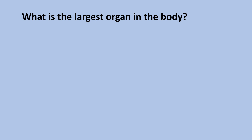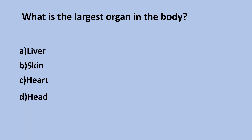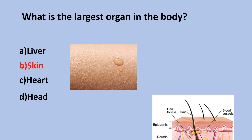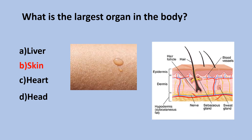Next question: what is the largest organ in the body? Is it the liver, the skin, the heart, or the head? The largest organ is the skin. Note that the liver is the heaviest. The skin and its derivatives — such as nails, sweat glands, hair, and oil glands — are part of the integumentary system.